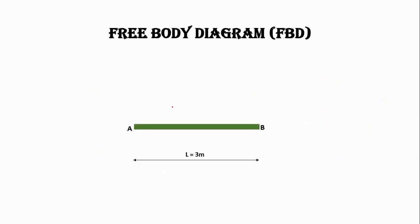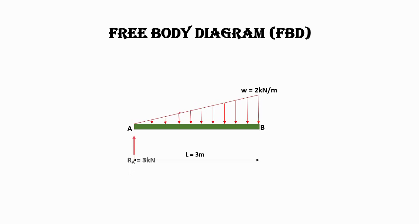Let's draw the free body diagram. This is beam AB of 3-meter length with triangular load of 2 kilonewton per meter acting on it. At support A, Ra equals 3 kilonewton and the moment in the anti-clockwise direction equals 6 kilonewton meters.